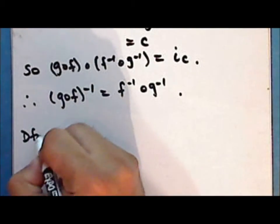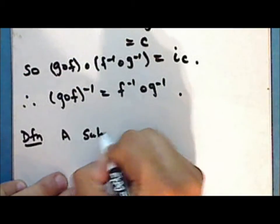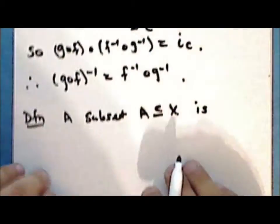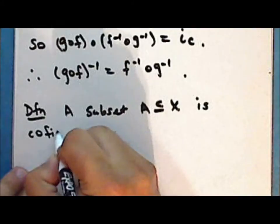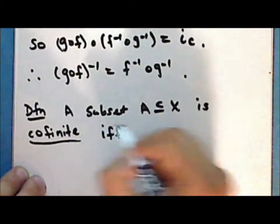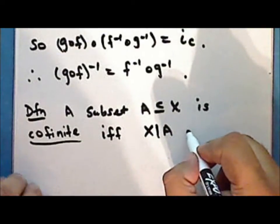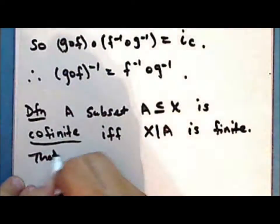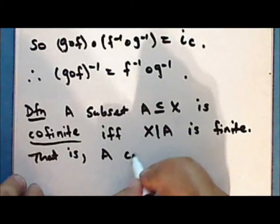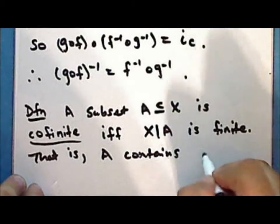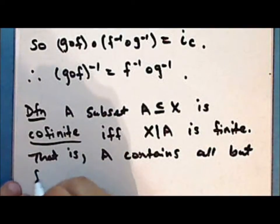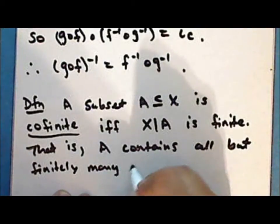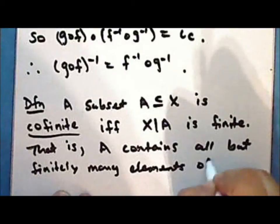New definition: A subset A of a set X is co-finite if and only if the complement of A in X is finite — that is, the set A contains all but finitely many elements of the set X.